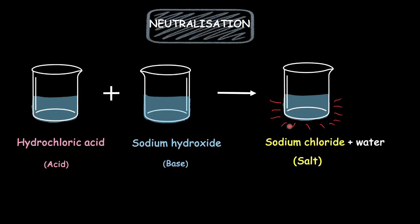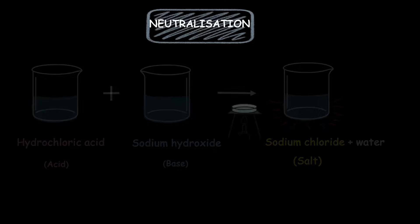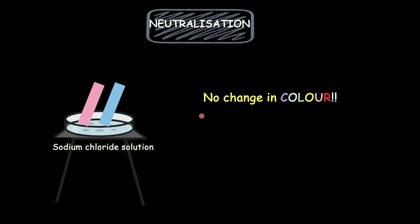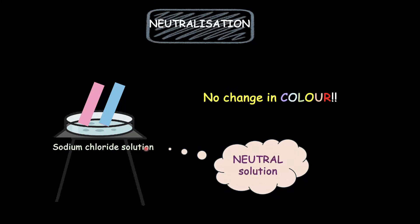So what did we get here? We got a neutral solution of sodium chloride. But how do we know for sure that what we got is actually a neutral solution? All you need to do is take a few drops of this salt solution in a small beaker or a petri dish and then place a litmus paper. Let's first place blue litmus paper and then red litmus paper. We would observe that there is no change in color — both the red litmus and the blue litmus paper will not change color, confirming the neutral nature of our salt solution.